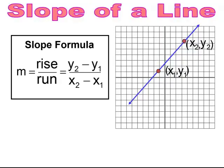We're going to be working with the slope formula to find the slope of a line. If you're given two points, you can find the slope using this formula. The slope is made up of rise over run — the rise is our y values and the run is our x values. You'll be given two points, or you can choose two points on a line, and find the slope.